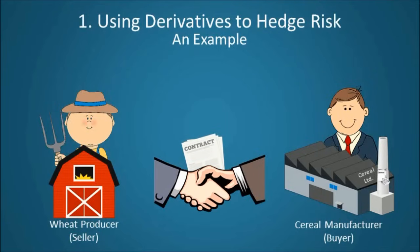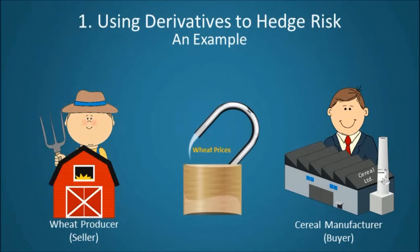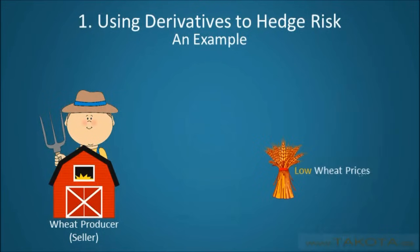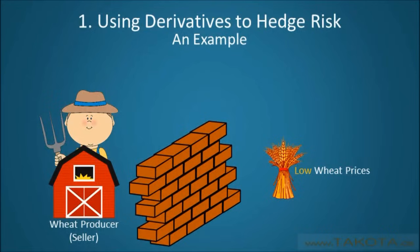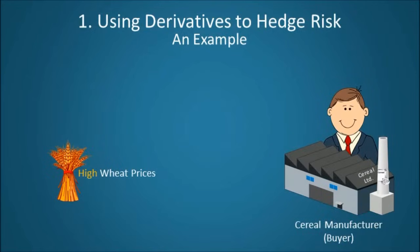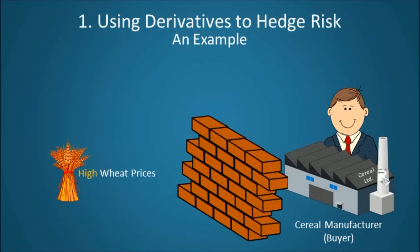For example, a wheat producer might agree to sell wheat to a manufacturer in six months at the current market price of $12, regardless of what the market price for wheat is in six months. By locking in the price of wheat, the producer is seeking to protect him or herself against an expected decrease in the price of wheat. On the other hand, the manufacturer is seeking to protect him or herself from an expected increase in the price of wheat.